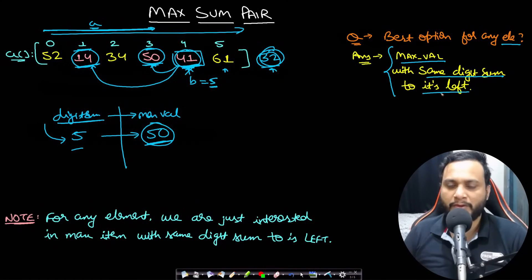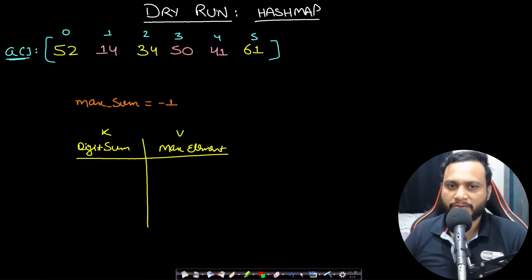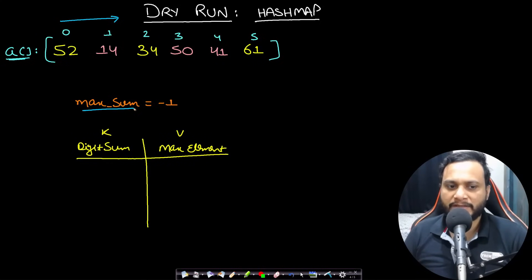We iterate left to right, and for each digit sum we maintain the maximum value seen so far in a hash map. When we reach a new element, we look up its digit sum in the map to find the best pairing candidate. We'll use a hash map (or array of size 6) and a max_sum variable initialized to -1.